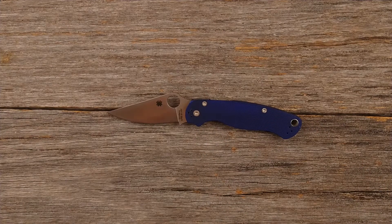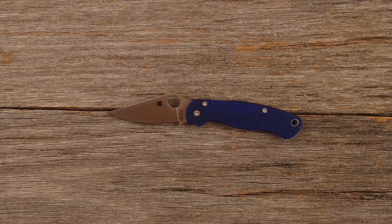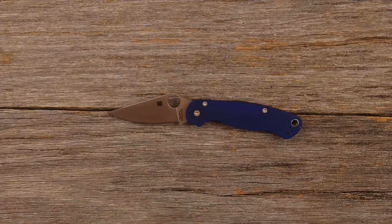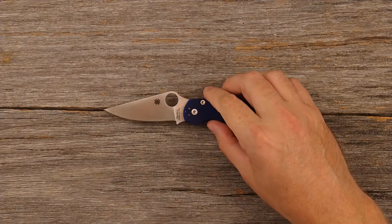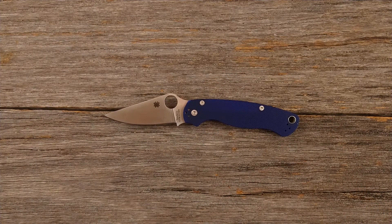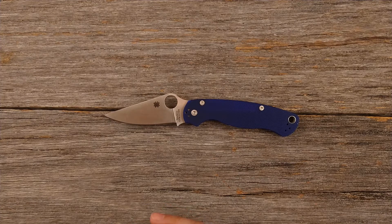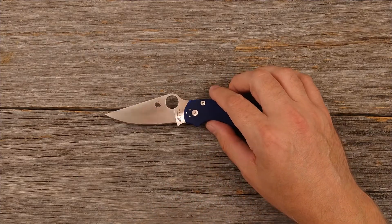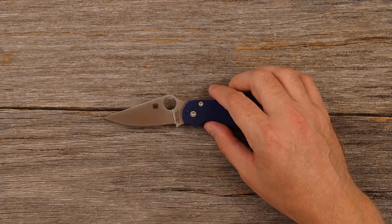As far as going back to the blade itself, the CPM S110V. So this is considered a super steel or a premium steel. It is extremely hard blade material. This is something that once you get an edge on it, it's going to hold that edge for a very long time. The only downside to that is it is also very hard to sharpen because of that.